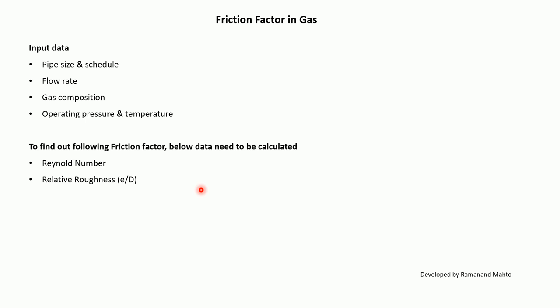The input data required for friction factor calculation in gas are: pipe size and schedule, flow rate, gas composition, and operating pressure and temperature. To find the friction factor, the following data needs to be calculated: Reynolds number and relative roughness.